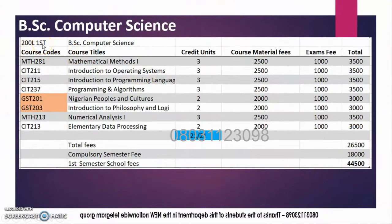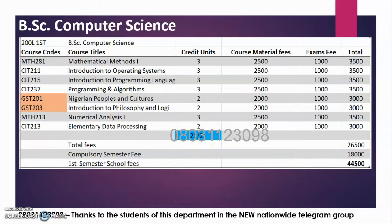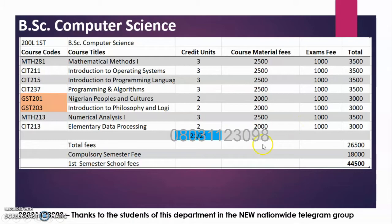200 level first semester — you have these courses here. You still have some GSTs and all of them are required: 21 out of 21. The tricky thing here is that you may not have extra courses to add to make it 24; it may not even be there. So you have to pass all of these — all of them, carry them and pass them. That's why 21 is required of you, and you have 21 here. Your fee is ₦44,500 total.